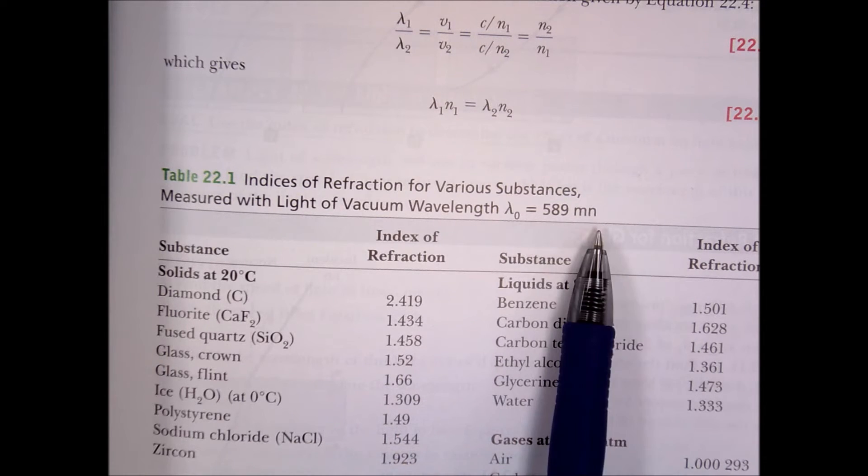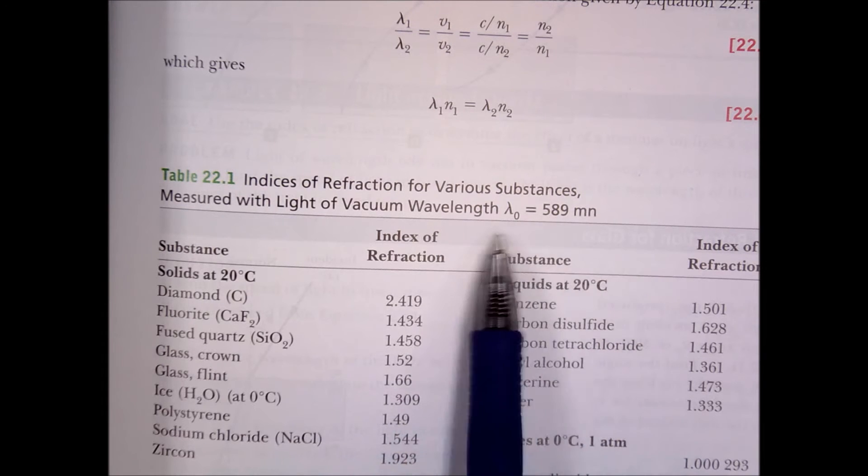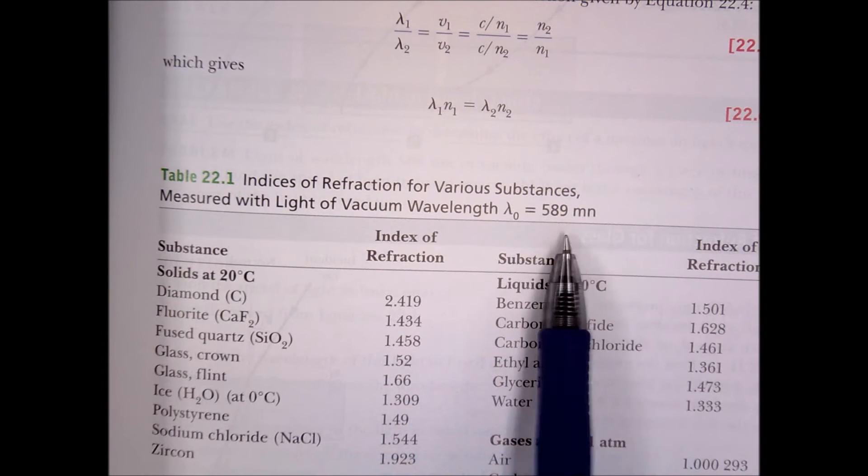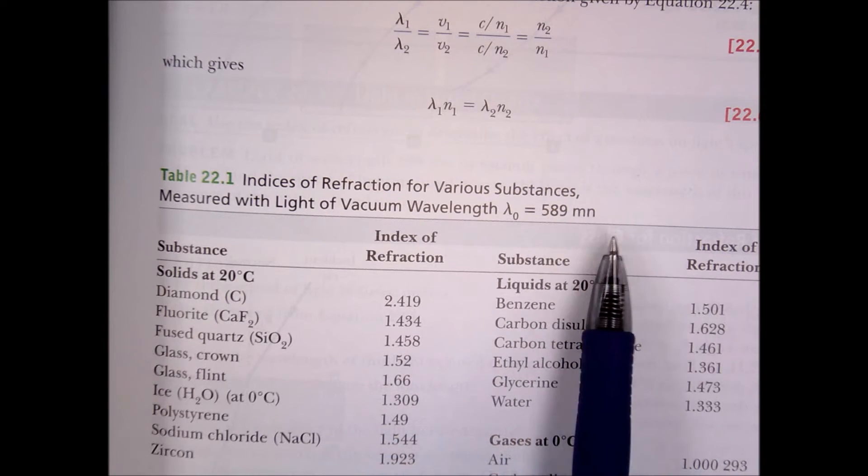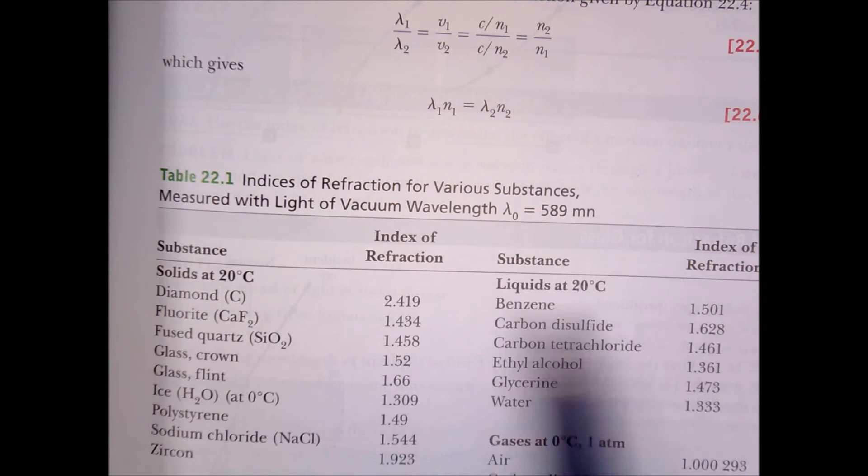MN. What is MN? Meters nano. It's like the Spanish version. So nanometers is what it should be. So this is a very specific wavelength.